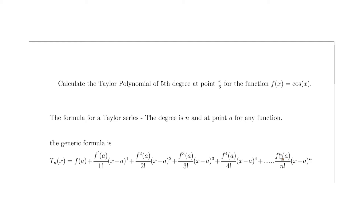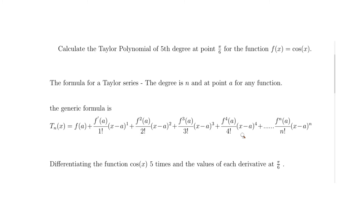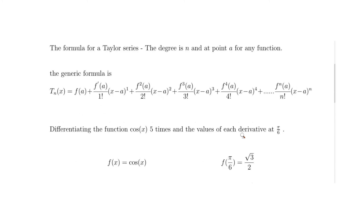For our fifth term we plug in 5 for n, giving us the fifth derivative of a divided by 5 factorial times (x - pi/6)^5. Next we want to differentiate cosine of x five times and calculate the value of each of those derivatives at pi over 6.